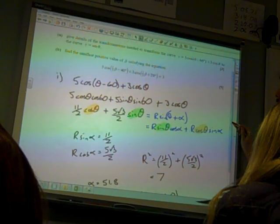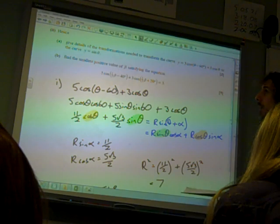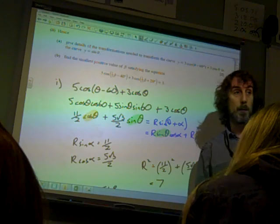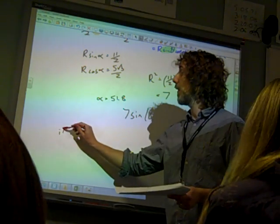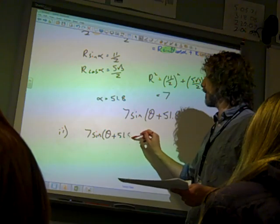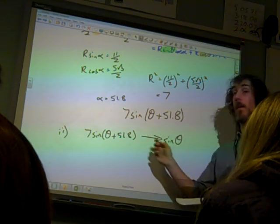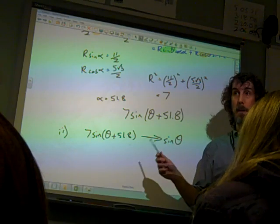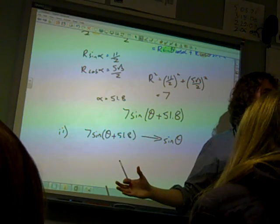Now, it then says, this was a little bit sneaky actually, wasn't it? Give details of the transformations needed to transform the curve to the curve y equals sin θ. Notice what we've done here. We're kind of doing the transformation backwards. We're going from 7 sin(θ + 51.8) to sin θ. It's the wrong way around. We normally go from sin θ to our transformed curve. We're going backwards. So we've got to remember, we know what those transformations would be going in that direction. We've got to do the inverse of those transformations.